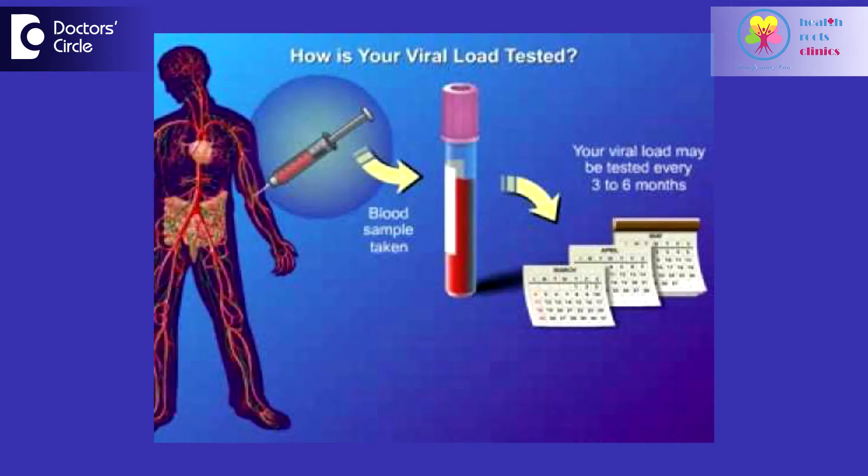The third type of HIV test, which becomes positive the earliest, is a test which directly detects the nucleic acid or the RNA of the HIV virus. This is called a PCR test or a viral load. So these are the three main types of tests that we use to establish HIV infection.